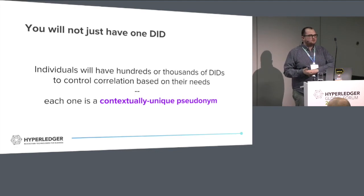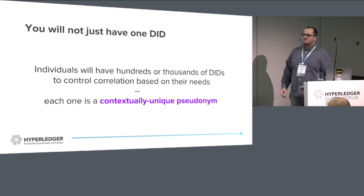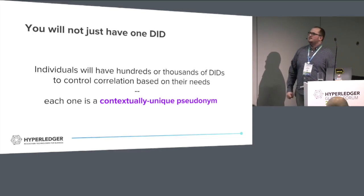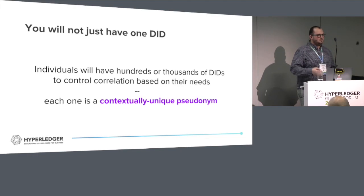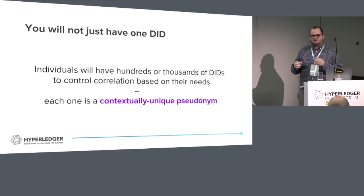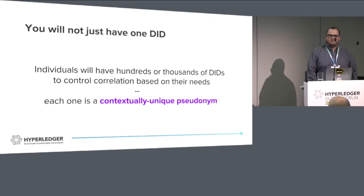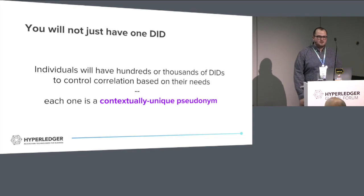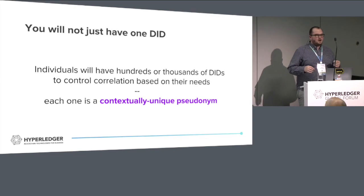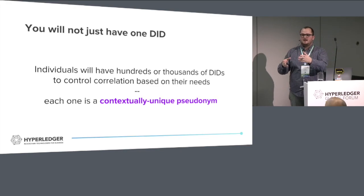These DIDs are meant to represent that relationship, but we realized that gives away a lot of correlating properties. That's where we came up with contextually unique identifiers, also referred to as pairwise identifiers. The idea is that you can have an identifier to control your correlation levels with other people. We didn't want the identifier itself to become the global cookie of the entire space, allowing any person to identify you. Since we had this giant trillion-number namespace, we were able to do this.